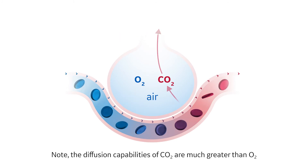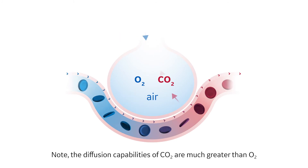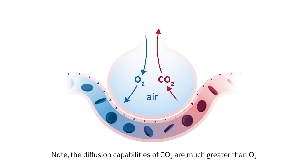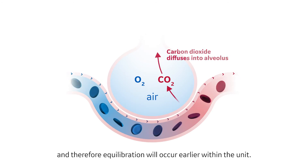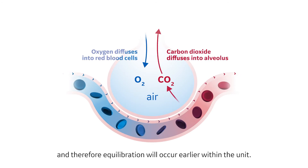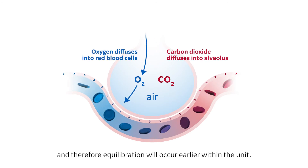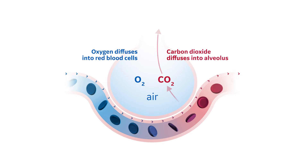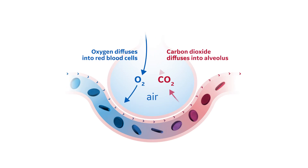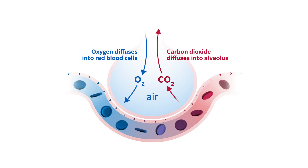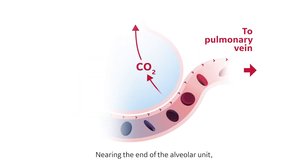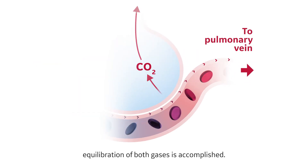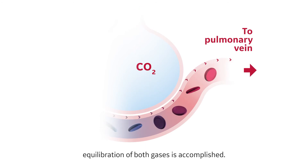Note, the diffusion capabilities of CO2 are much greater than O2, and therefore equilibration will occur earlier within the unit. Nearing the end of the alveolar unit, equilibration of both gases is accomplished.